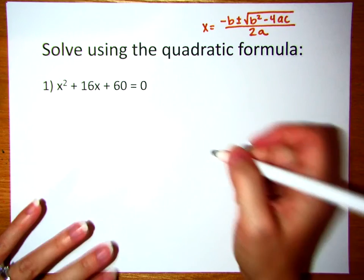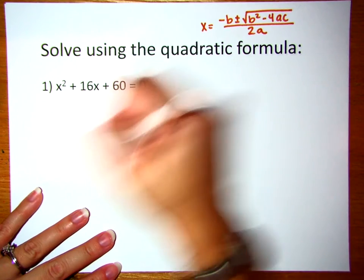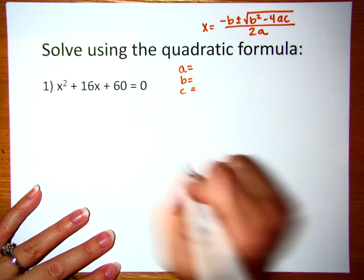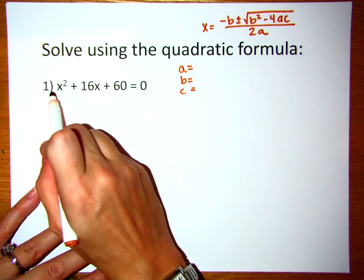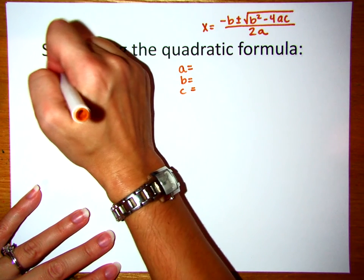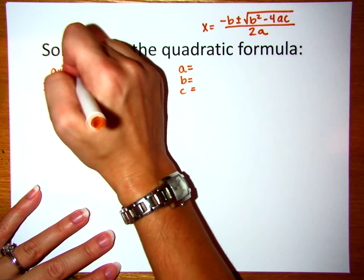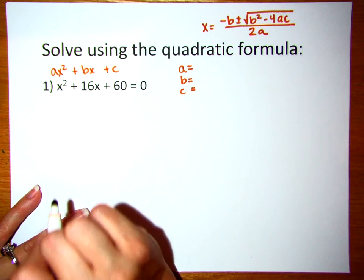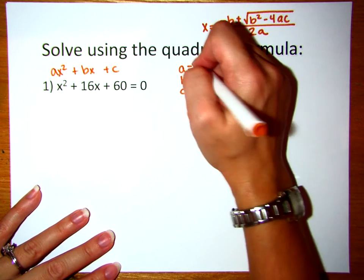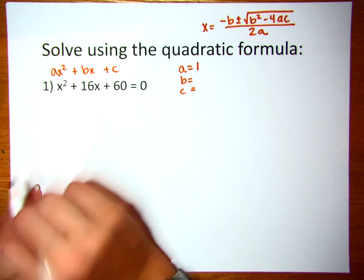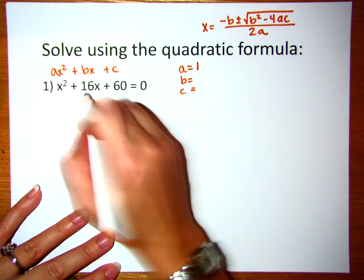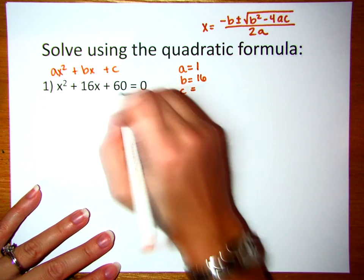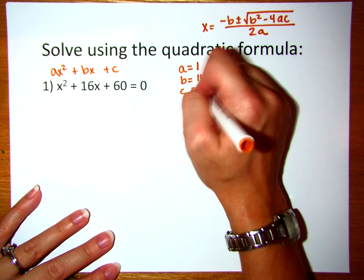When you start using the quadratic formula, you first want to identify what a, b, and c are. Remember, it's ax squared plus bx plus c in this form. So a here is 1 — when you don't see that number, there's an invisible one there. b is the coefficient in front of x, which would be 16. And c is the constant, so that would be 60.